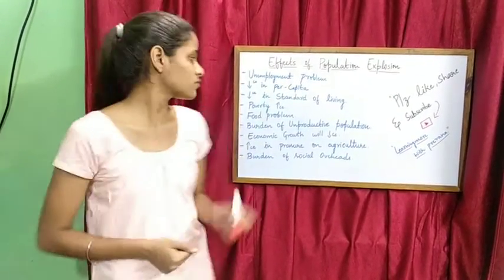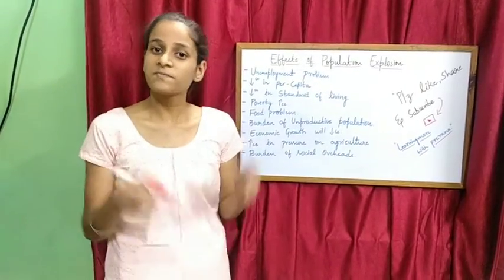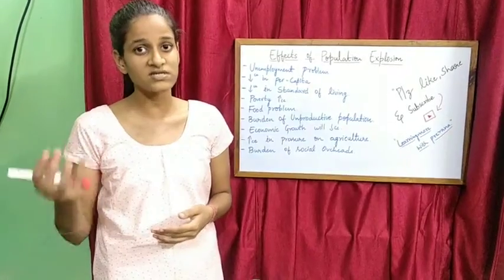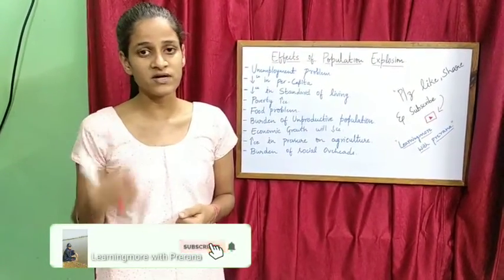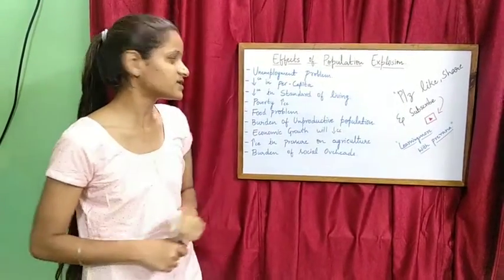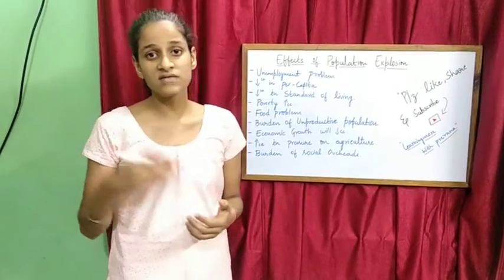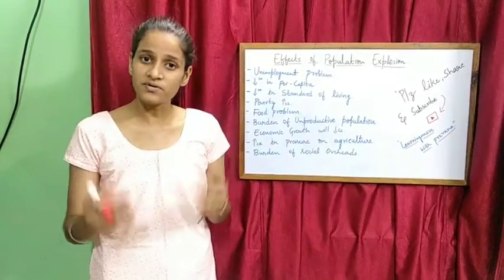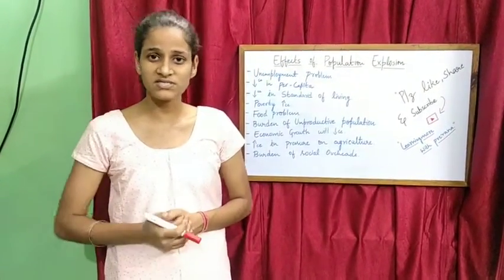The next point is decrease in standard of living. When people have less income or fewer job opportunities, the standard of living of the people will come down. The next point is poverty increases. Due to unemployment and decrease in per capita income, the poverty level in the country or that particular state increases.